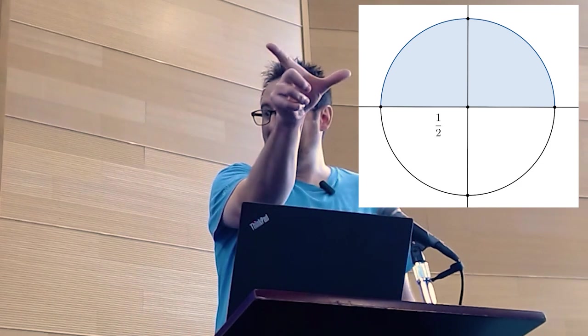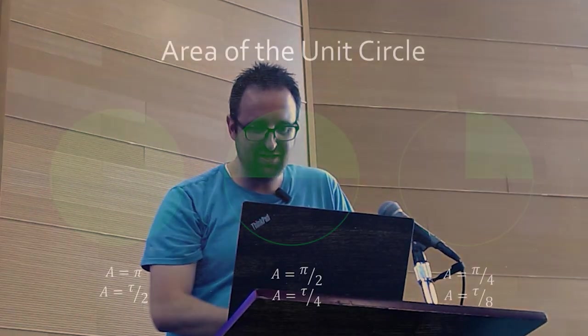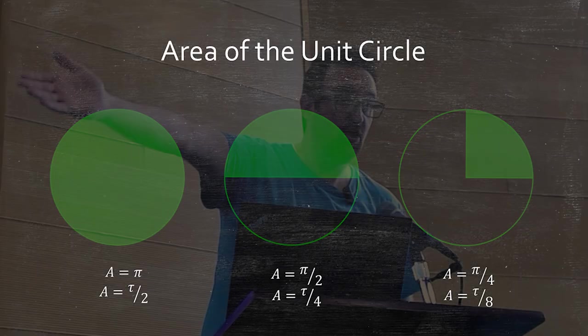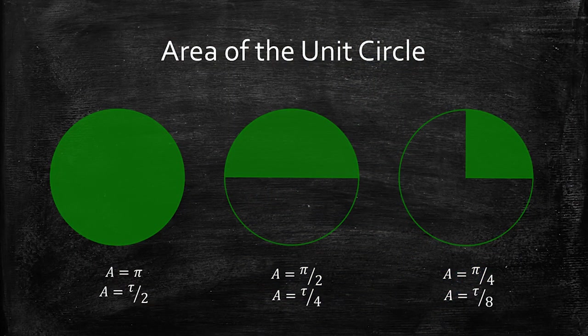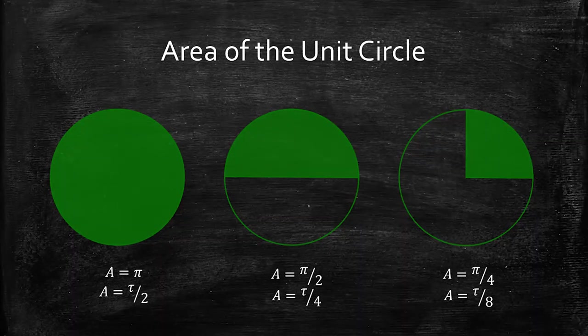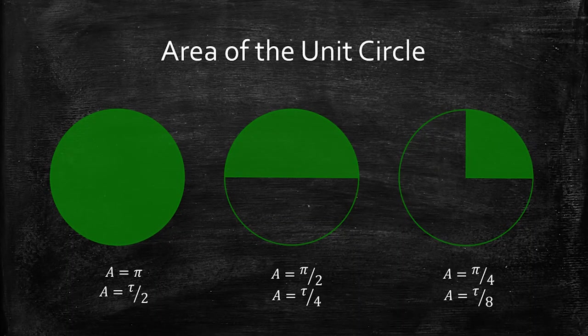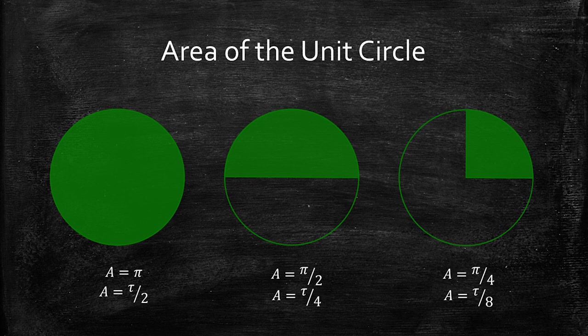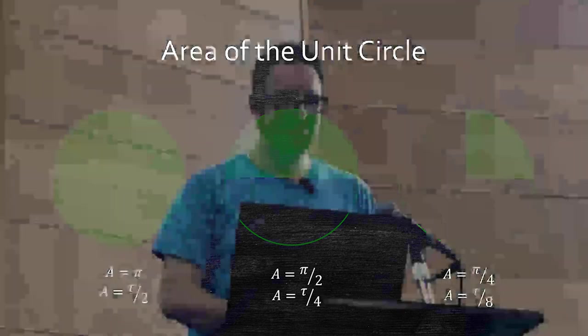But you know we talked about the fact that this was a quarter right? And that this is a half and all that stuff. Well you know if you look at the area of the unit circle, what do you think the one on the left is? That looks like a what? It looks like a whole right? There's a whole one there right? Okay. If you look in the one in the middle, how much of the circle's there? Half. And the one on the right, it's a quarter.